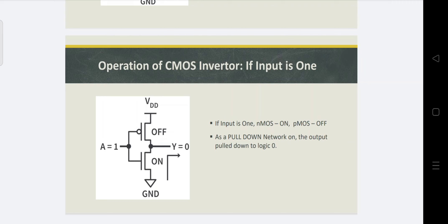If input is 1, it turns off the pull-up network which is the PMOS, and turns on the NMOS transistor which is the pull-down transistor. So we can get 0 as output because the NMOS is connected to ground. If the PMOS transistor is on, it acts as a switch which passes VDD to the output — VDD is usually 5V or 12V — so logic 1 is obtained.